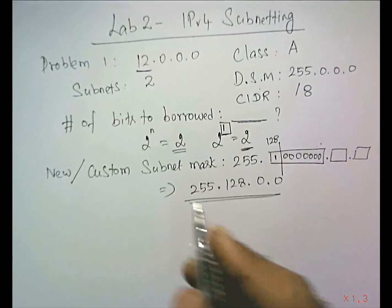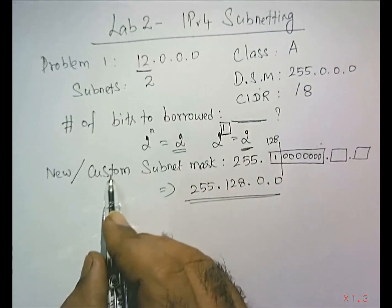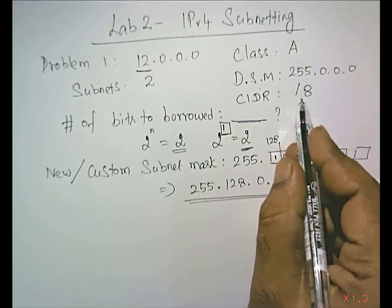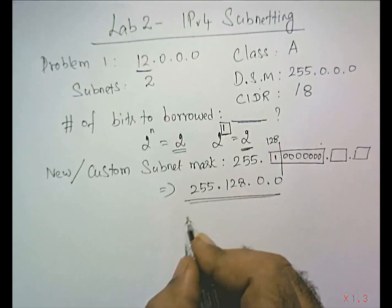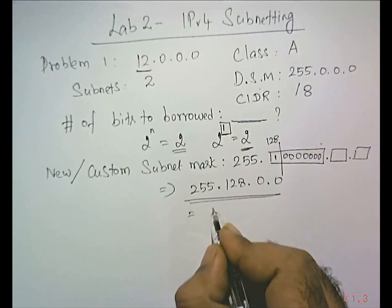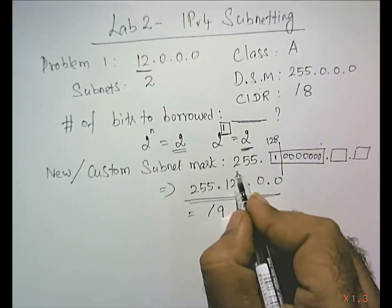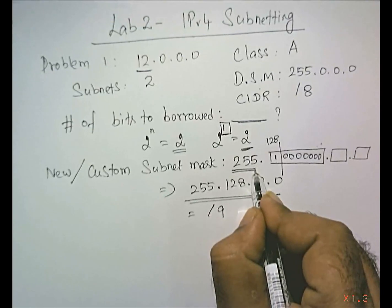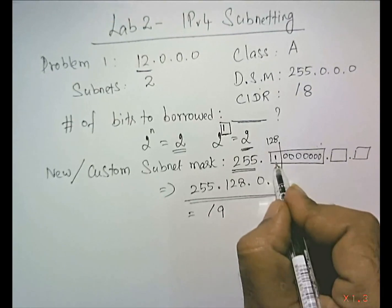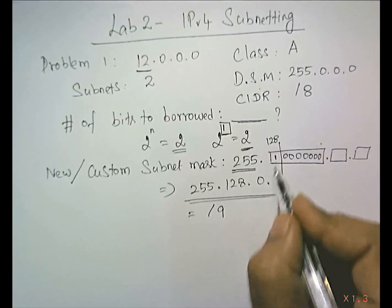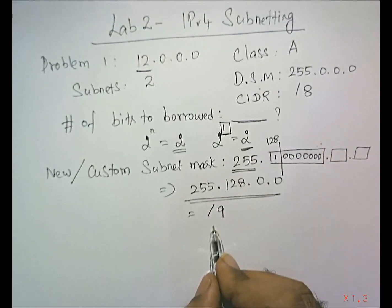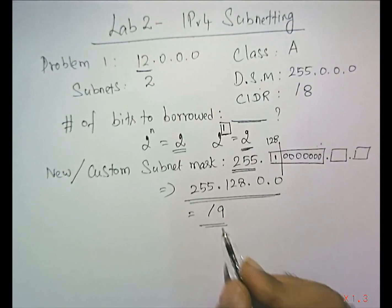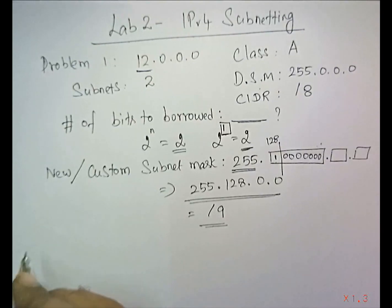The new custom CIDR value: we had 8 bits in the first octet and borrowed 1 more, so 8 plus 1 equals 9. The custom CIDR value is /9.